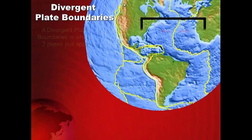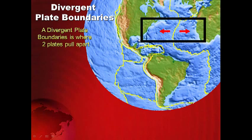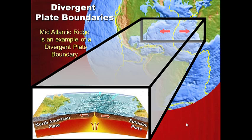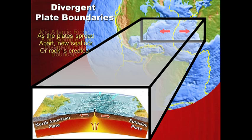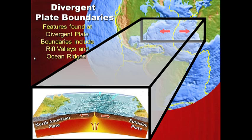At a divergent plate boundary, like in the mid-Atlantic, plates are spreading apart. If we take a cross section, you can see the ocean ridge. As the plates spread apart, new rock or seafloor is created. Features found at divergent plate boundaries include rift valleys — this crack down the middle is a rift valley — and this mountain range is called an ocean ridge. The most famous example is the mid-Atlantic ridge.